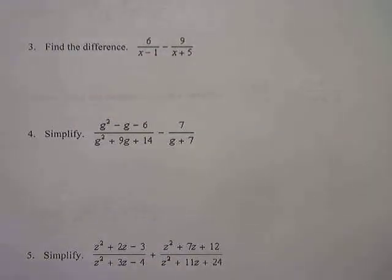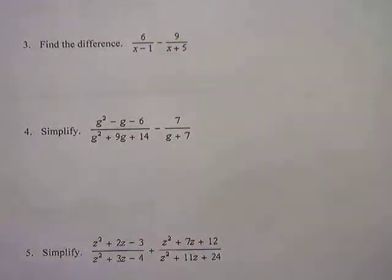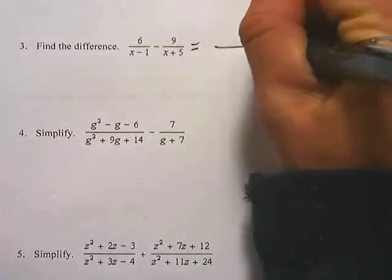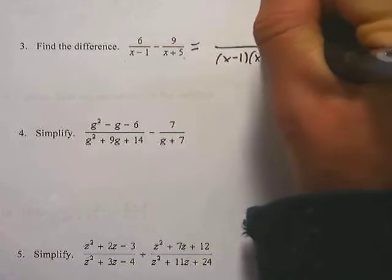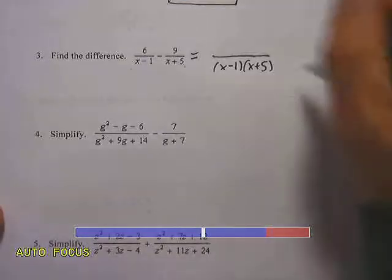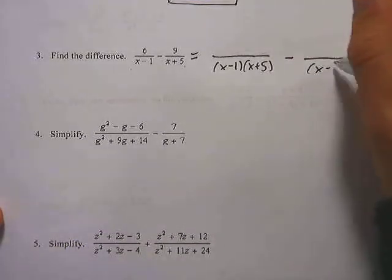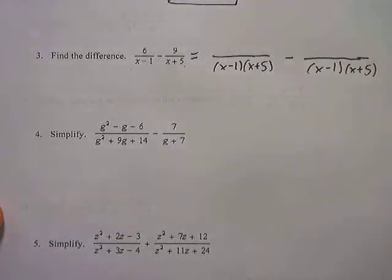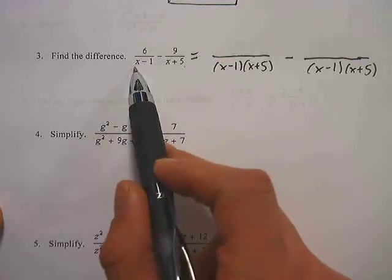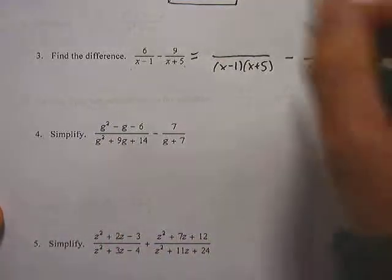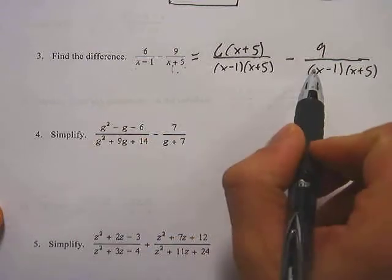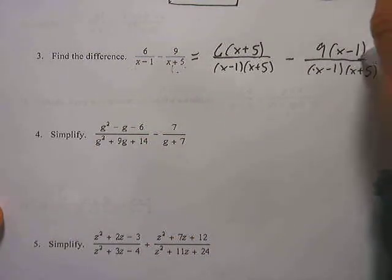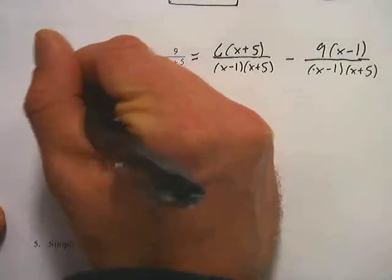Numbers 3 and 4 are both subtraction problems, reviewed from the last unit. In order to subtract, we need a common denominator — simply these two variables multiplied together: x minus 1 times x plus 5. I multiplied the bottom of the first fraction by x plus 5, so I must also multiply the top by x plus 5. For the second fraction, I had to multiply the bottom by x minus 1, so I multiply the top by x minus 1 as well.